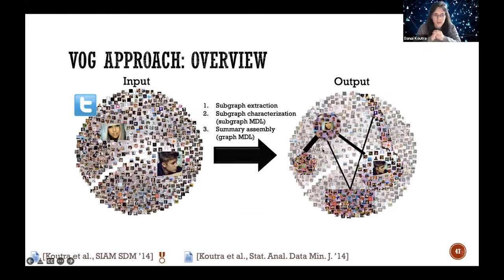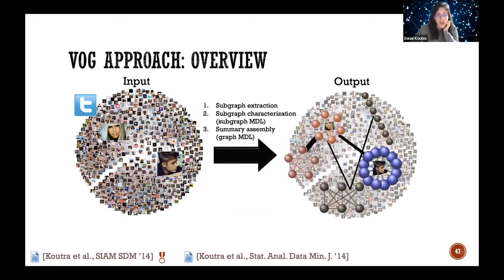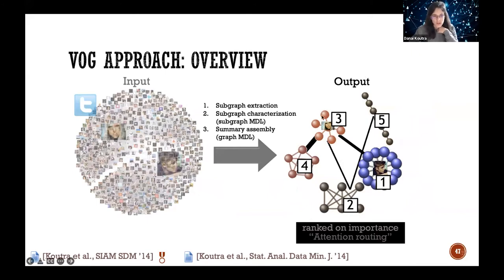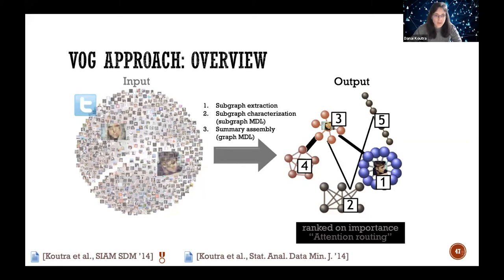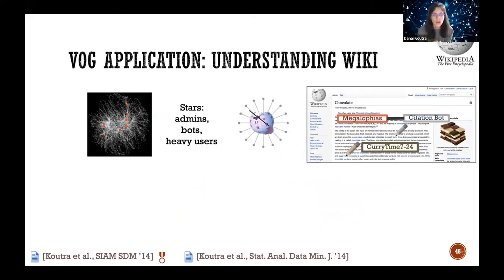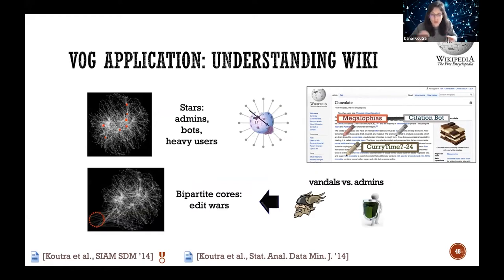The approach has steps: subgraph extraction, characterizing subgraphs in terms of their shape using MDL, then finding the final summary globally. We don't only have a bag of structures but can rank them by importance based on how much they help compress the original graph, which can be used for anomaly detection. Applied to a Wikipedia co-editor graph, among the most important structures were stars corresponding to admins, bots, and heavy users, as well as bipartite cores that were edit wars between vandals and admins.